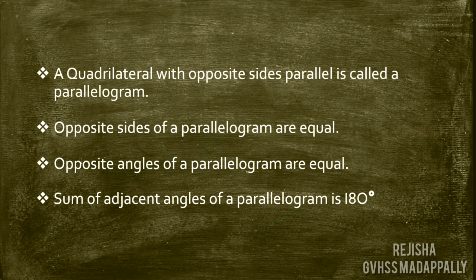Hence, we can conclude that a quadrilateral with opposite sides parallel is called a parallelogram. The peculiarities of a parallelogram are: opposite sides of a parallelogram are equal, opposite angles of a parallelogram are equal, and the sum of adjacent angles of a parallelogram is 180 degrees. You must write all these peculiarities with a picture in your notebook.